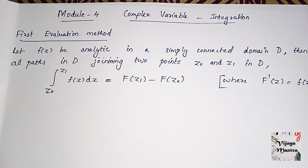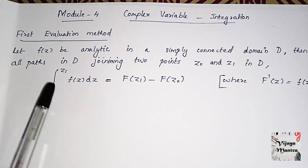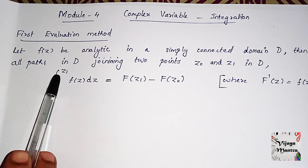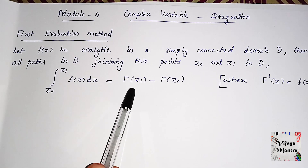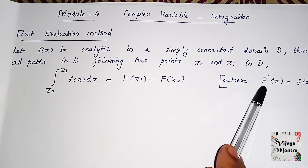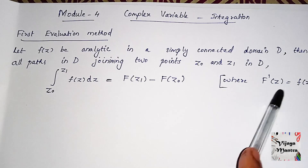We start with constant values a and b in the complex plane with complex numbers. In complex integration, we have the integral from z0 to z1 of f(z) dz, which equals f(z1) minus f(z0), where f'(z) is the derivative.